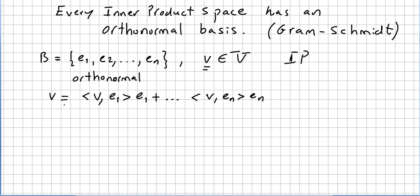Every vector v in the vector space can be written this way: inner product of v, e₁ times e₁, plus... plus the inner product v, eₙ, the last one here, product by eₙ.